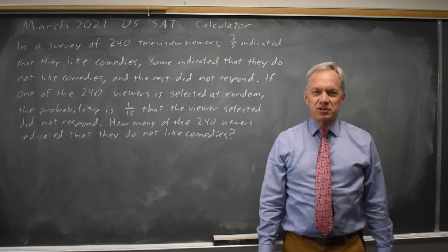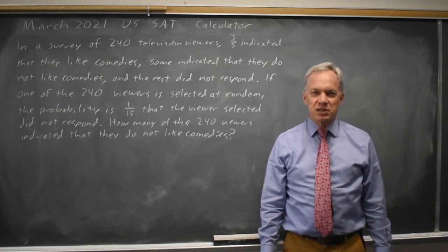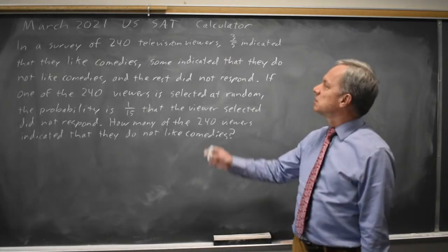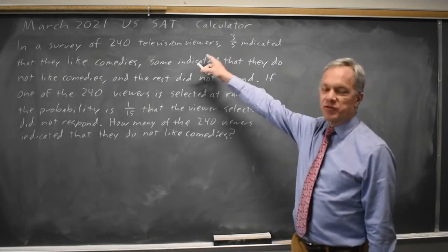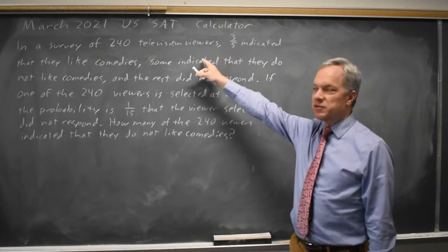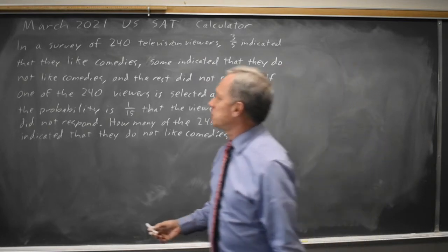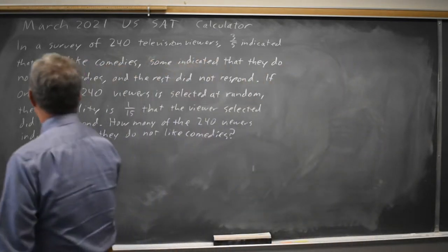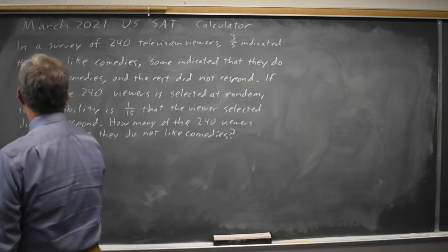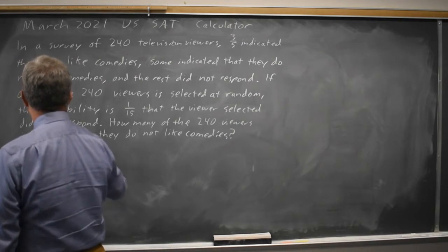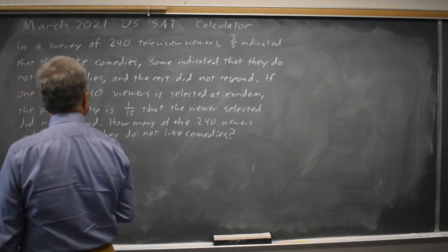I'm Dr. Roger and this question is from the March 2021 U.S. SAT calculator section. College Board describes television viewers — 240 of them. Three-fifths indicated that they like comedies, so that's 144 like comedies.